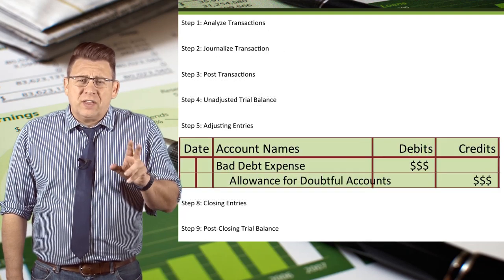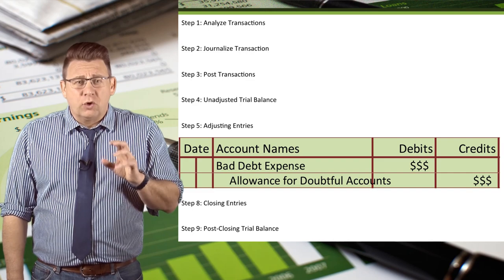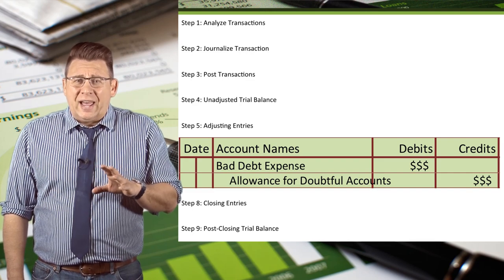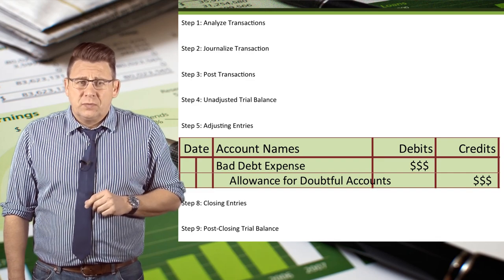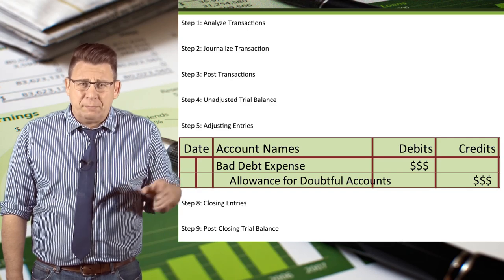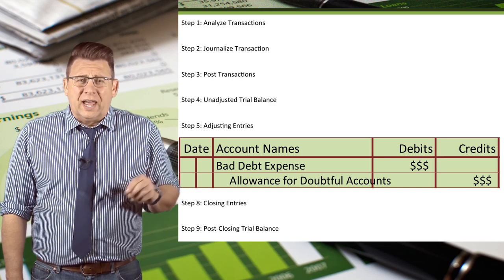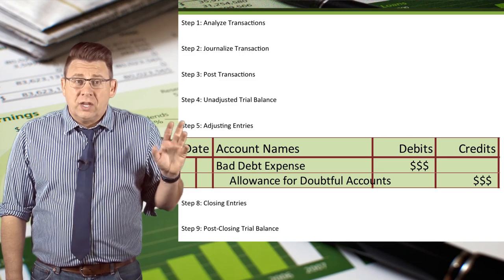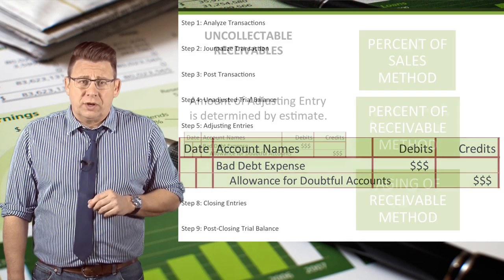Under the allowance method, bad debt expense is recorded at the end of the period as an adjusting entry. The adjusting entry is a debit to bad debt expense and a credit to the allowance for doubtful accounts. Here is when expense gets recorded.